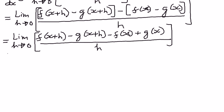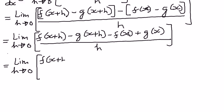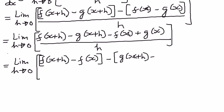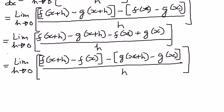Now, if we collect the f terms and g terms together, we can write this as follows. Limit as h approaches 0. In the numerator we have f of x plus h minus f of x — and I'll put that in brackets — minus, pulling out the minus sign, g of x plus h minus g of x. The whole thing divided by h.